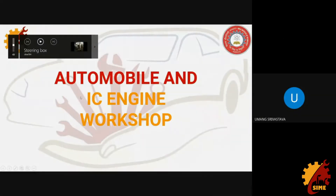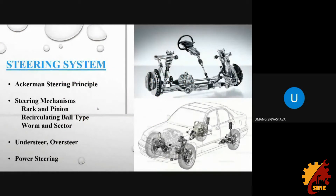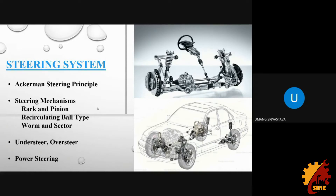Let's start with the second session on the steering system. The steering system is basically how we steer our car towards right and left. In this session I'll be covering Ackerman steering principles, rack and pinion steering mechanism, types of Pitman arm — including recirculating ball type and worm sector — along with understeer and oversteer, and a glimpse of power steering.